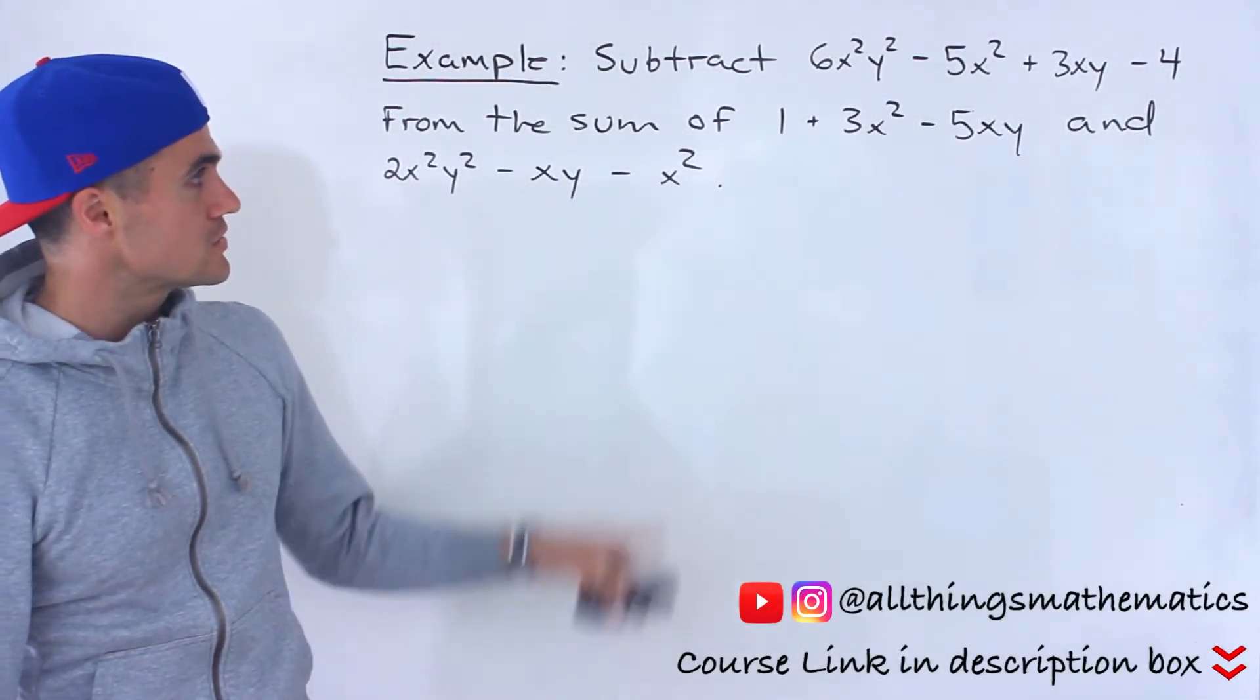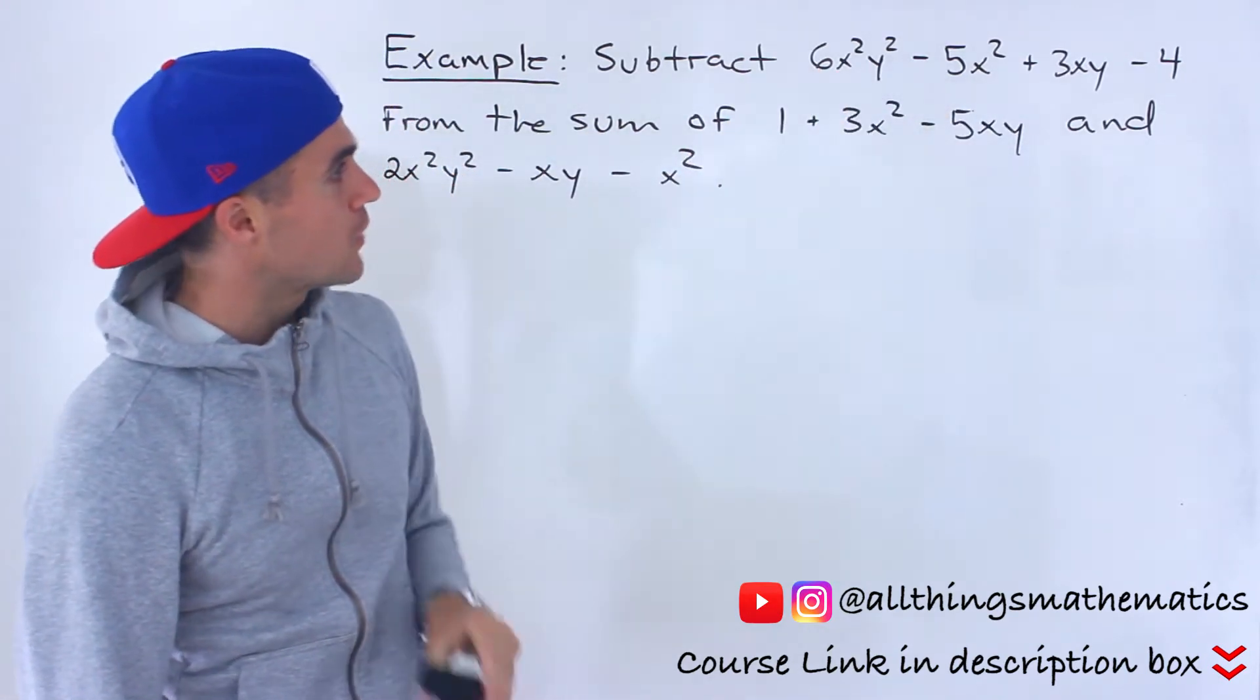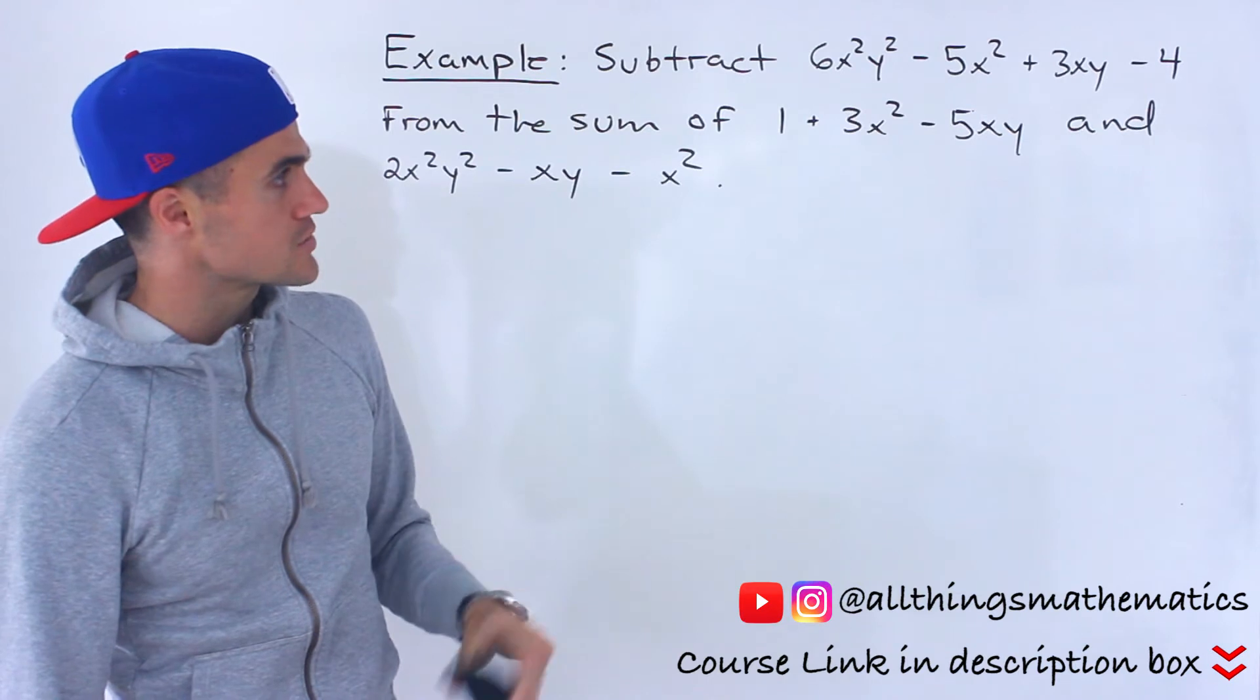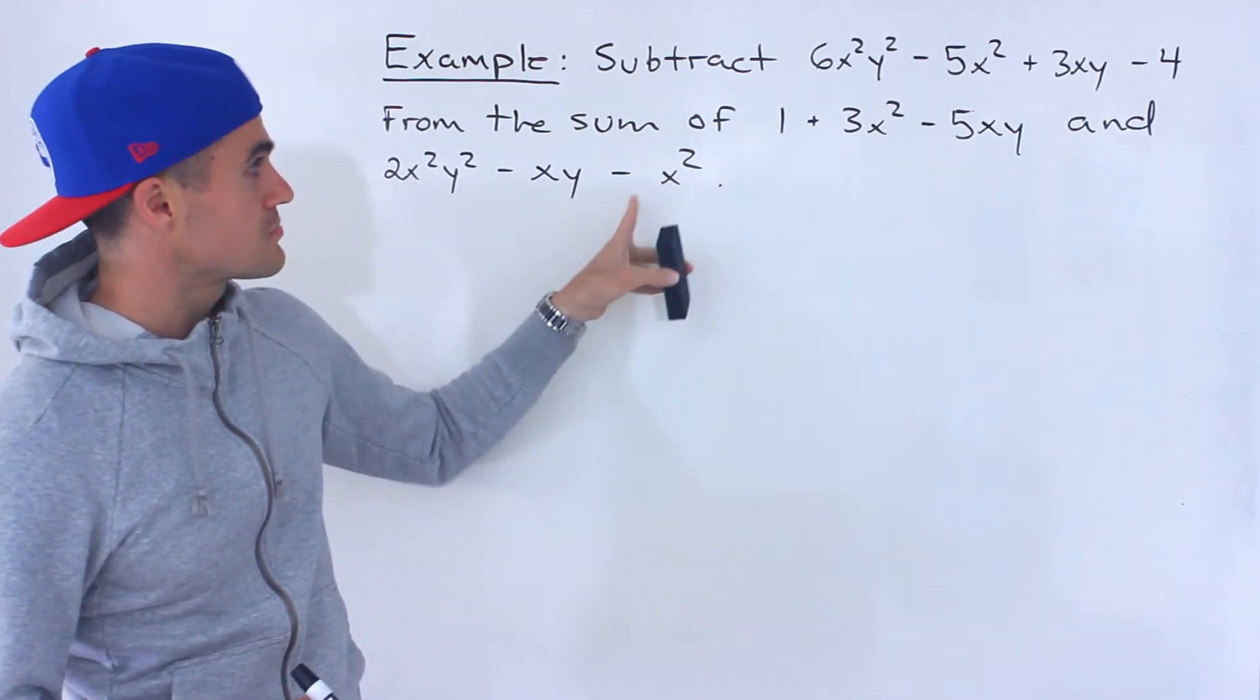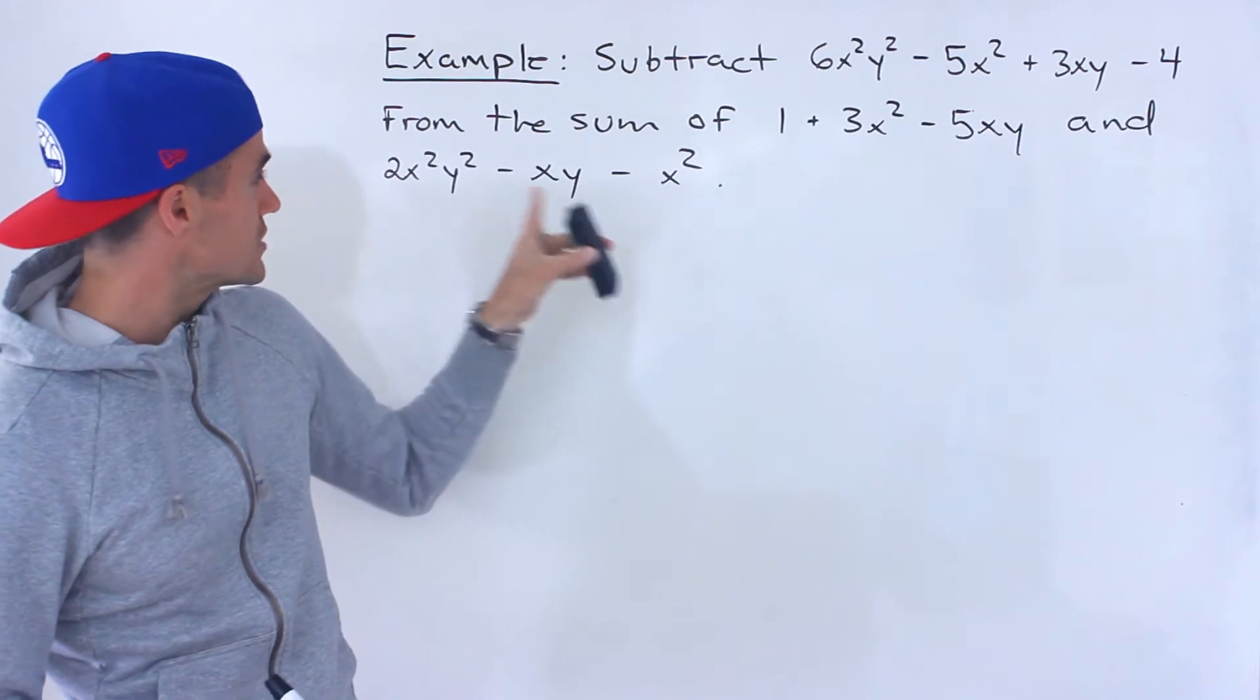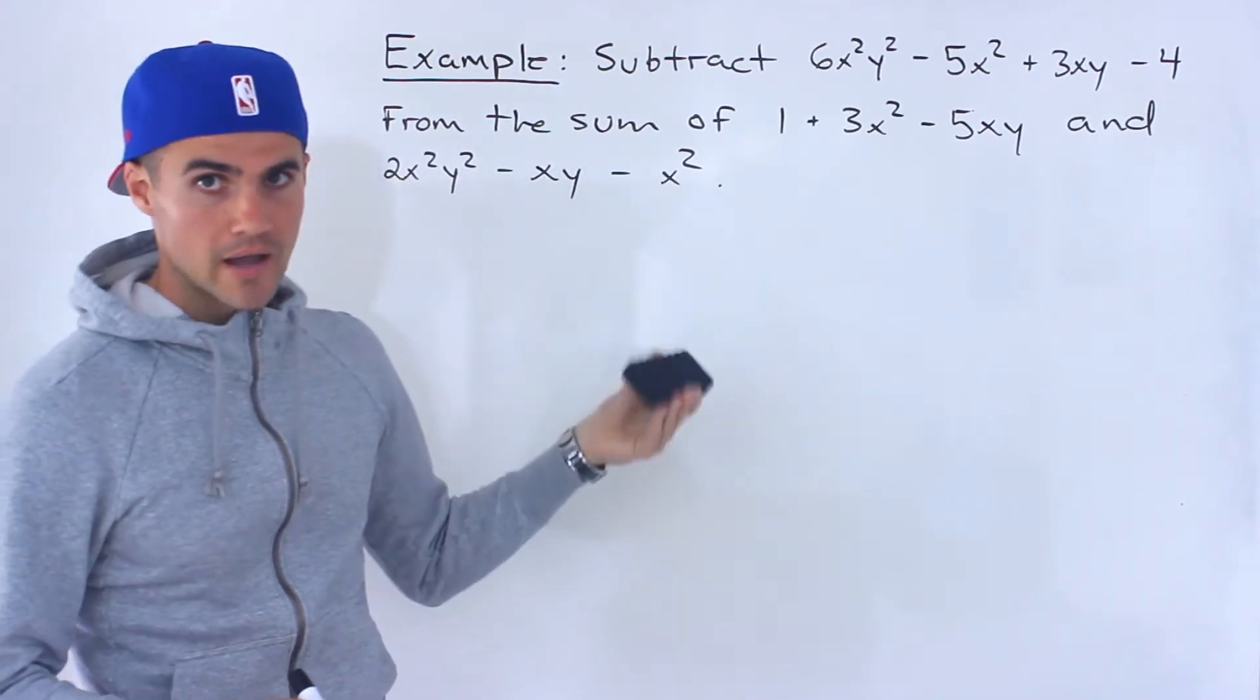In this next video, what we have to do is we've got to subtract this expression here, 6x²y² - 5x² + 3xy - 4, from the sum of these two expressions: 1 + 3x² - 5xy and then 2x²y² - xy - x².